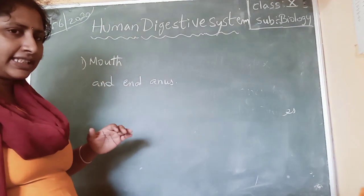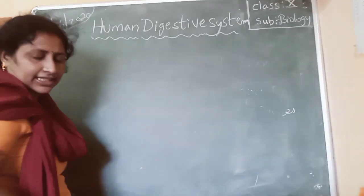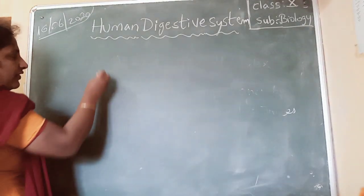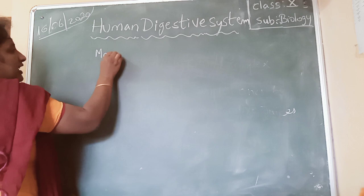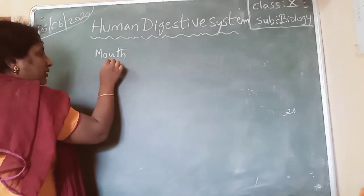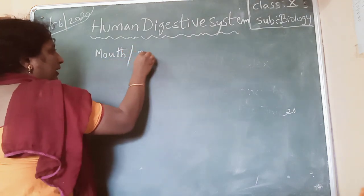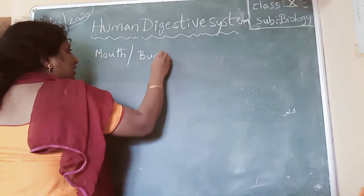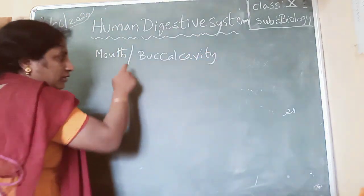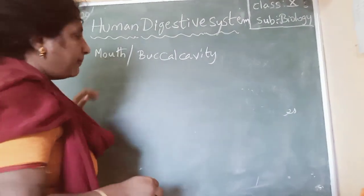First, let us see how food passes through the digestive system. I will tell you the pathway first. The mouth is also called the oral cavity or buccal cavity. Food enters into the body through the mouth or buccal cavity.